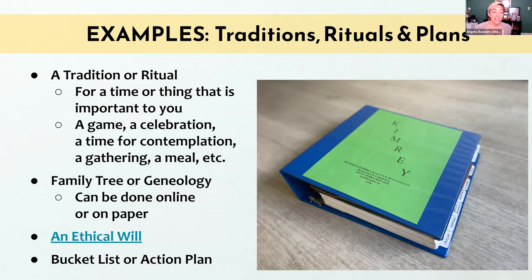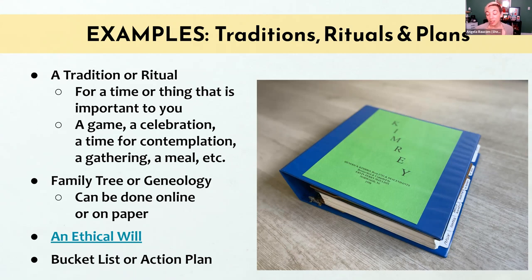You can also undertake an ethical will — not a legally binding document, but something that communicates to your loved ones more informally what your wishes and desires are. You can also come up with a bucket list or action plan just for you or for your loved ones. If you love to travel, make that bucket list of what you want to do, when, and how — or tell your loved ones the places you went when you were younger and that you really want them to go there someday.